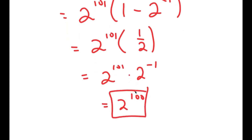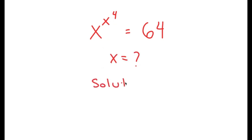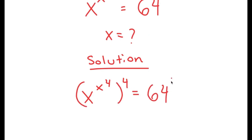So that's the second method of solving this problem. In this video, I'm going to solve the equation x to the power of x to the power of 4 is equal to 64. The variable I want to find the value of is x. For my solution, I'm going to first start by taking the power of 4 on both sides, so I get x to the power of x to the power of 4, to the power of 4, is equal to 64 to the power of 4.